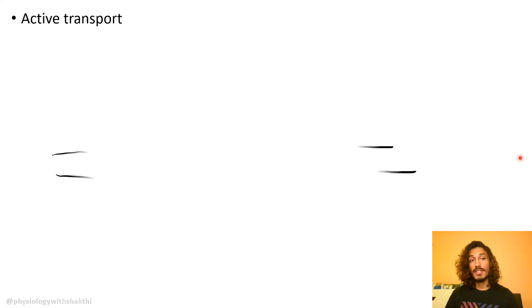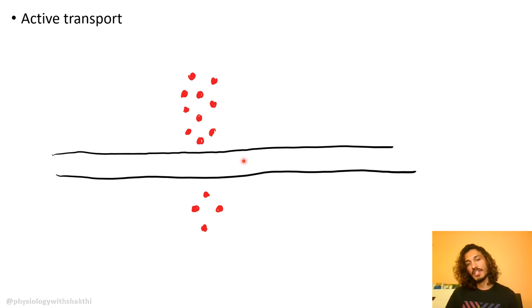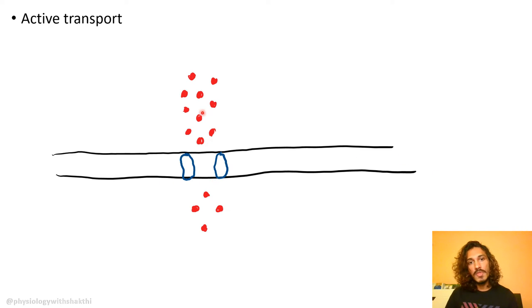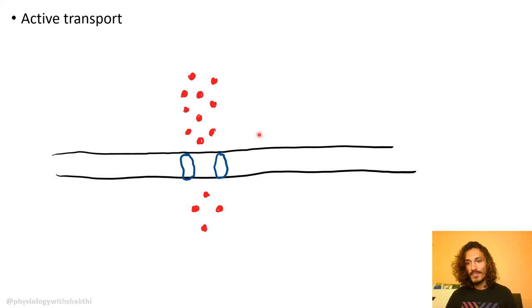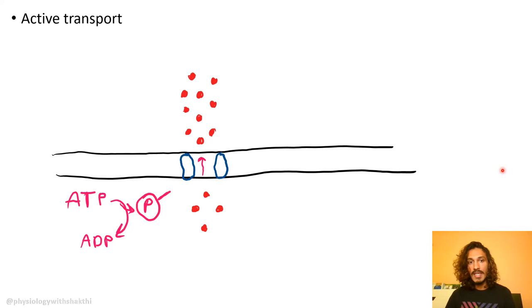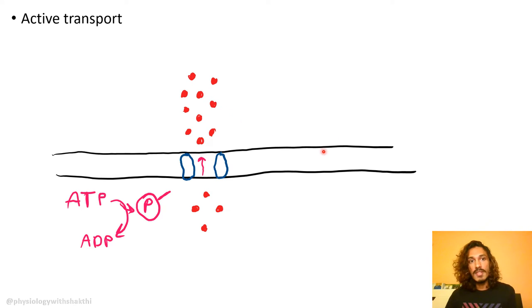Now talking about active transport: unlike diffusion, which moves substances from high to low concentration, active transport moves substances up the gradient — the opposite direction. To do something energetically unfavorable, you need to spend energy. In primary active transport, ATP is utilized — ADP and inorganic phosphate phosphorylate the channel, causing a conformational change that moves the substance up the concentration gradient.